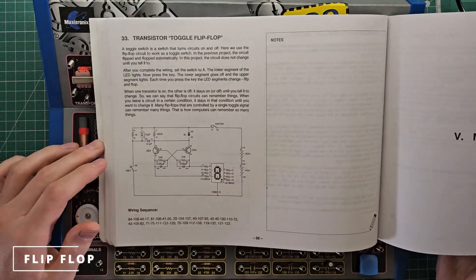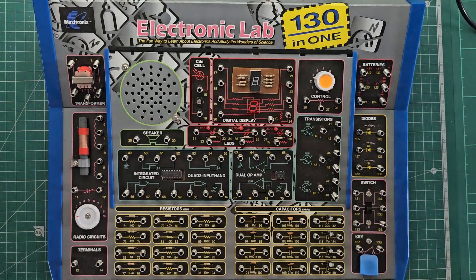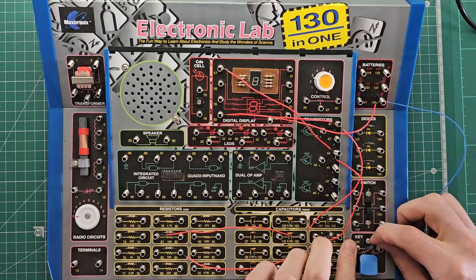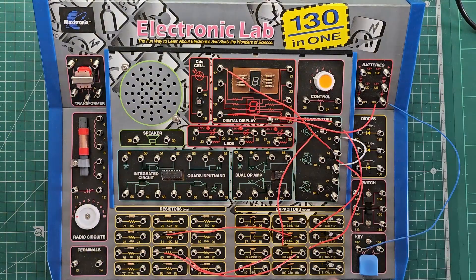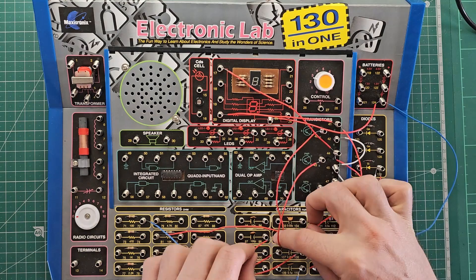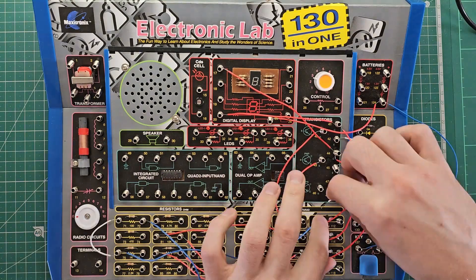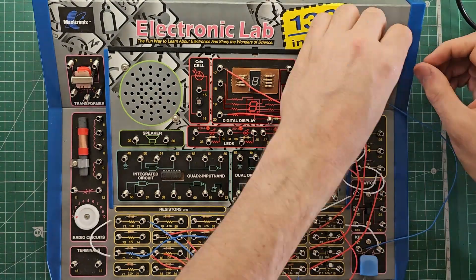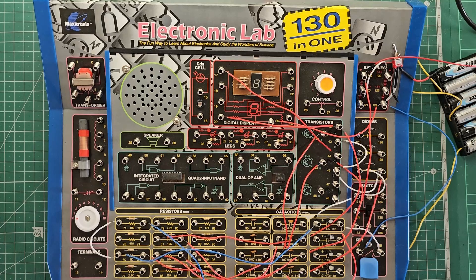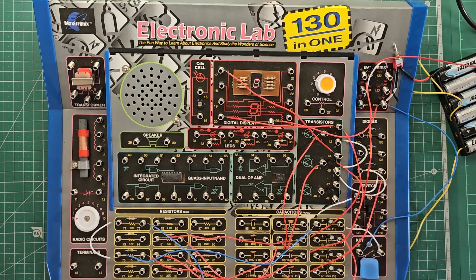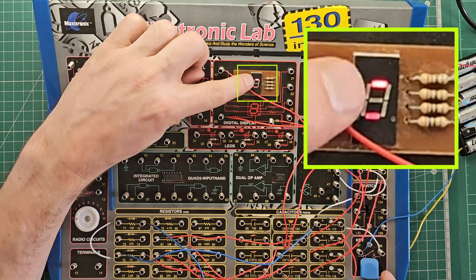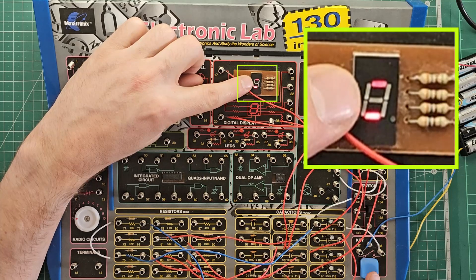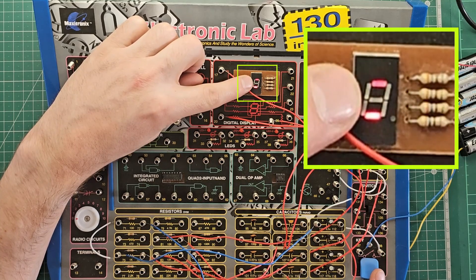Next we'll take a look at circuit number 33, transistor toggle flip-flop. Alright, let's see what it does. First we'll start by turning on the power switch, and we see here we have a bright segment and a dim segment. And if I tap the key, it toggles to the other state. Every time I tap the key, it toggles from one to the other.